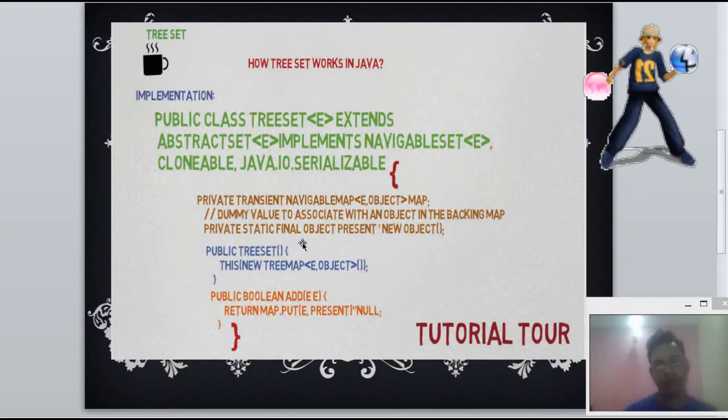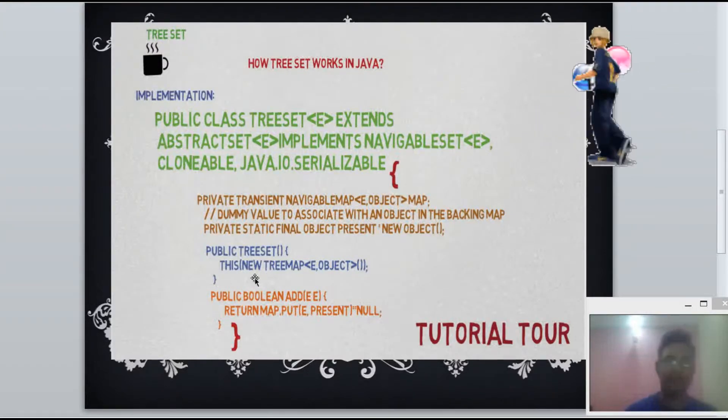When we create a TreeSet object by calling constructor, it internally is calling the new TreeMap object and passing element as key and dummy object which we have created here as value.